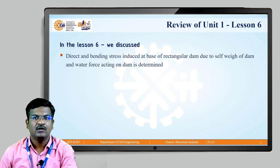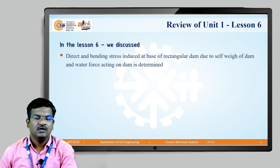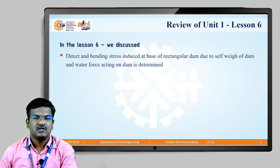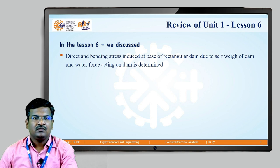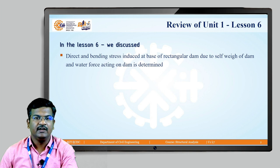This is lesson number seven. Let us take a review of lesson number six. In lesson six, we discussed how to calculate the direct and bending stress at the base of a rectangular dam. These stresses are induced due to the self-weight of the dam as well as the water force acting on the dam. We also discussed various terms: the X term, D term, and eccentricity, and how to calculate these for the rectangular dam.